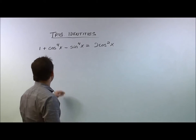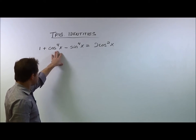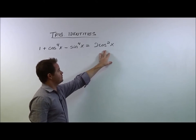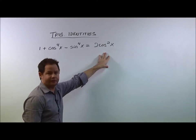So let's take a look at this problem. We have 1 plus cosine to the fourth of x minus sine to the fourth of x is equal to 2 cosine squared of x.